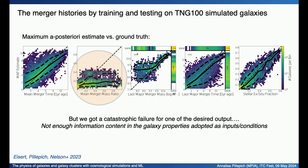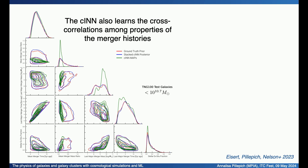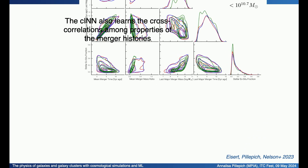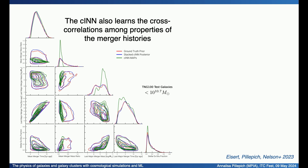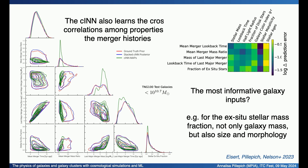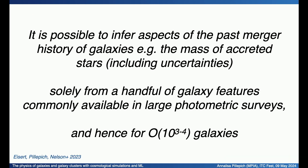In some cases, we have catastrophic failure, and we interpret this as there not being enough information content in the particular set of galaxy properties we chose. This machinery also allows us to learn cross-correlations among properties of the merger histories — for example, that galaxies with more mass in major mergers also show higher ex-situ fractions, or that galaxies with more recent major mergers have higher ex-situ fractions. We can also say what the most informative galaxy properties are: beyond stellar mass, size and morphology are also very important for inferring ex-situ stellar mass fraction. This can be applied to thousands of galaxies from shallow photometric surveys.